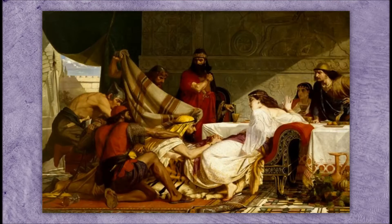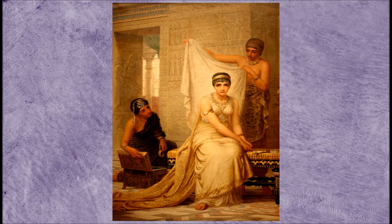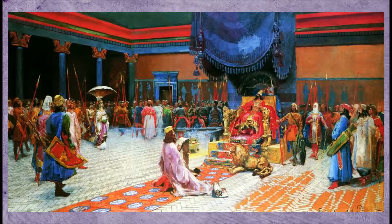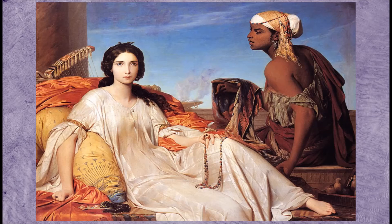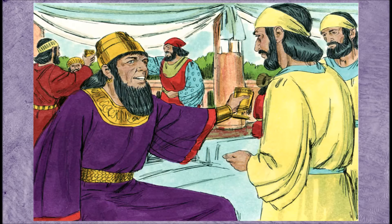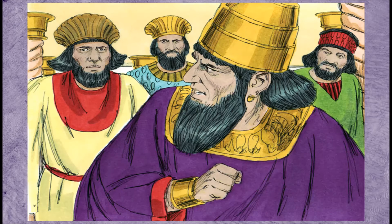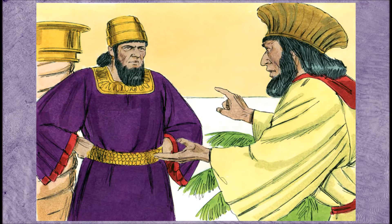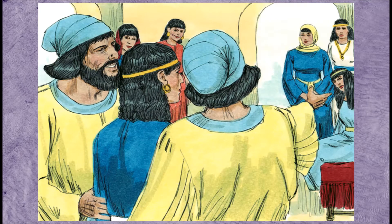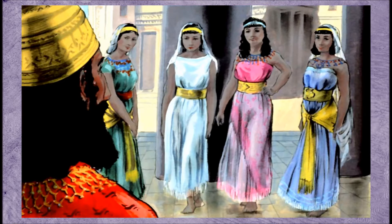In chapter 1, Xerxes holds a big wild party for all of his nobles, and he calls for Queen Vashti to come out and strip dance for him and his several hundred drinking buddies, but she refuses. So his buddies tell him that if he doesn't punish her, then all women in Persia will follow her example and disobey their husbands, and they recommend to Xerxes that he get a new queen. Xerxes agrees, so all the virgin girls of the region were gathered together and brought to his palace for a beauty contest.